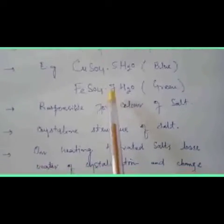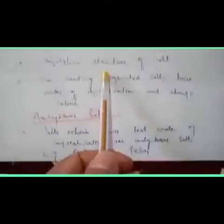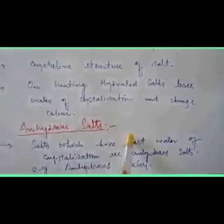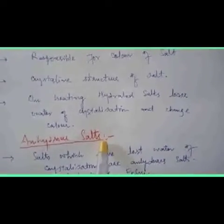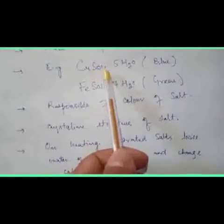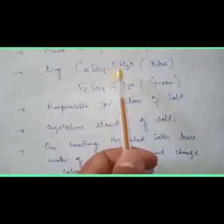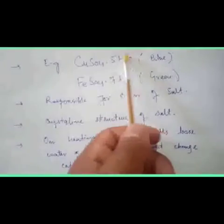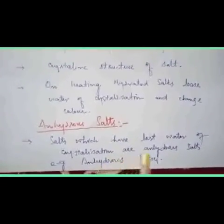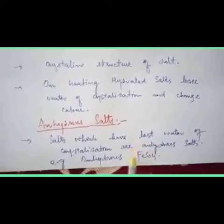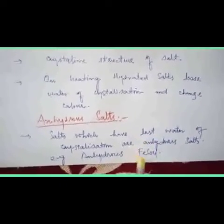Anhydrous salts are those salts which have lost water of crystallization. Salts lose water of crystallization when we heat them. For example, if we take copper sulfate pentahydrate and heat it, it loses those five water molecules, and after heating we get anhydrous copper sulfate. This anhydrous salt has no color and is not present in crystalline form.